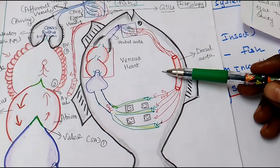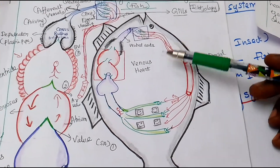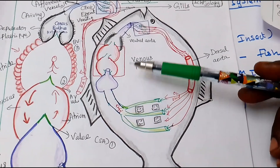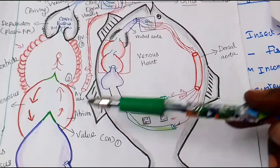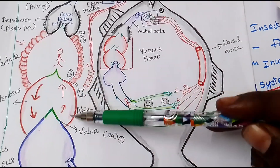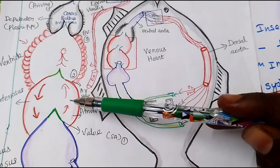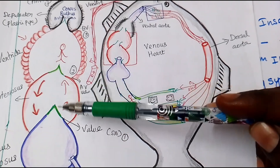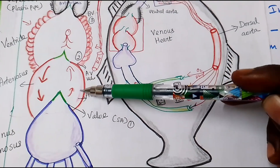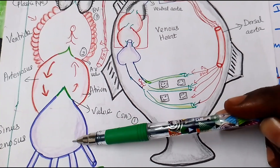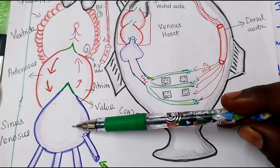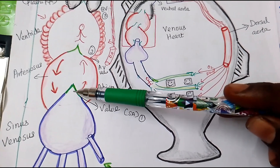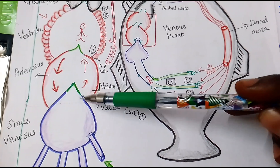Next, the circulatory system of the fish: the fish has a two-chambered heart. The blood stays in a closed apparatus. There is an atrium and a ventricle. Below the atrium there is a structure called the sinus venosus, which has valves acting like a sinoatrial (SA) valve.